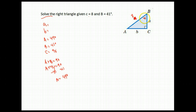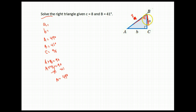For angle B at 41 degrees, let's say I wanted to find side A. For angle B, I have the hypotenuse, and side A would be the adjacent side. So which trig function uses adjacent and hypotenuse? That is the cosine. The cosine of angle B is the adjacent side over the hypotenuse.